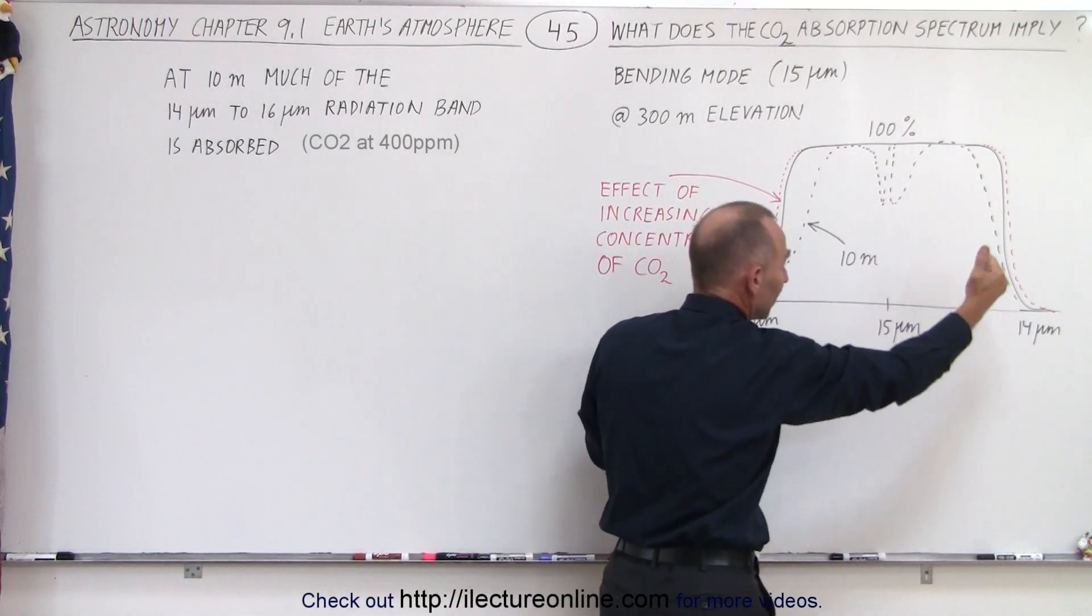But you can see that what this means is that the absorption spectrum is a region of the portion of the radiation band that gets radiated from the earth, that carbon dioxide is very effective in absorbing.